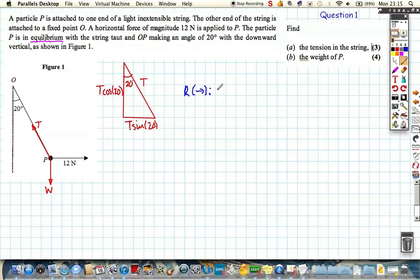Well, we've got 12 acting to the right from the particle, and I've got the horizontal component of tension is T sine 20, and it's acting away from the particle, so it's minus T sine 20. As it's in equilibrium, it's equal to 0. So, let's call that equation number 1.